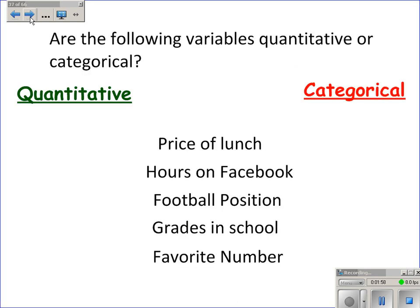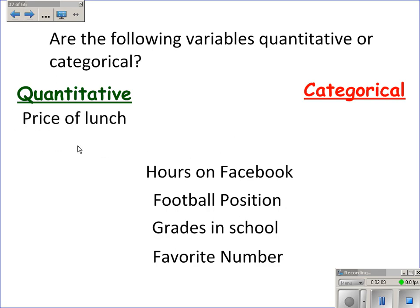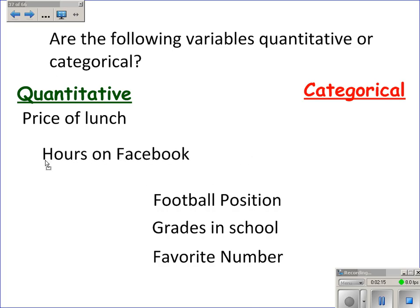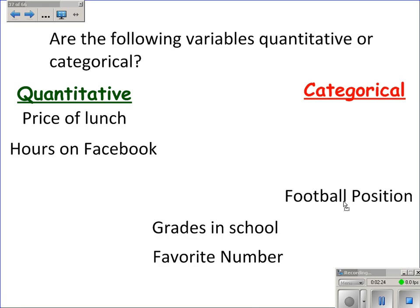So, are the following variables quantitative or categorical? The price of lunch is an amount in money, so it is quantitative. Hours on Facebook — it's hours, so it's quantitative. Football position would be quarterback, offense, defense — those are all in different categories, so it's categorical data. Grade in school, like freshman, sophomore, junior, senior — those are categories.